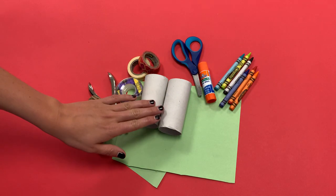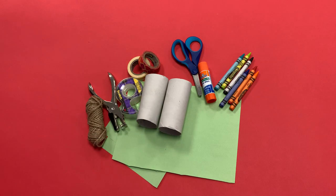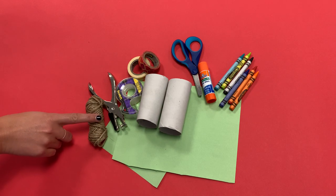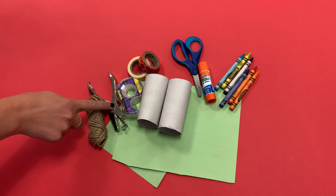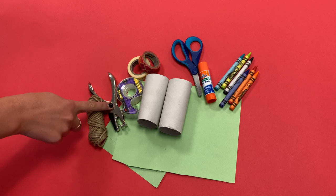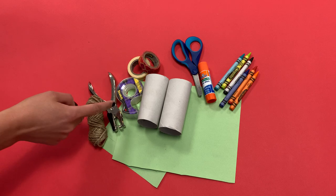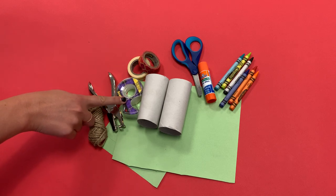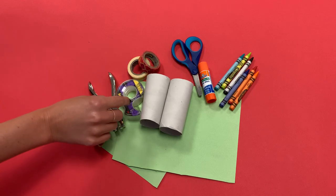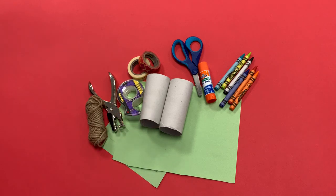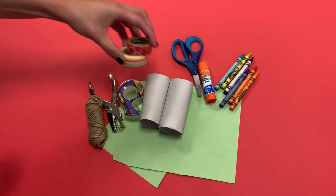For this activity you're going to need some toilet paper rolls or you can use paper towel rolls cut in half. You'll need some string. I've used a hole punch here just to make the holes on the side of the binoculars a little bit easier. You can also use sharp scissors. You're going to need some tape. You can use clear tape or double-sided tape to tape the construction paper to the toilet paper tubes.